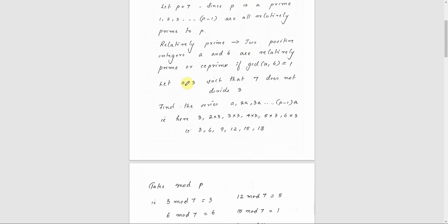Next, we are choosing an element A. Let A equal to 3. Note that 7 does not divide 3. We are generating a series: A, 2A, 3A, etc. up to (P-1)·A. With A equal to 3, the series is 3, 2×3, 3×3, 4×3, 5×3, and 6×3. The answers will be 3, 6, 9, 12, 15, and 18.